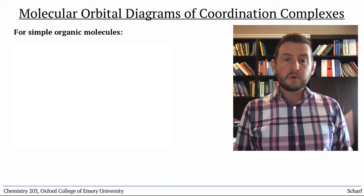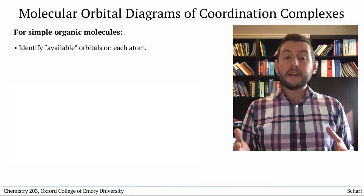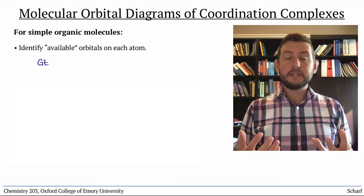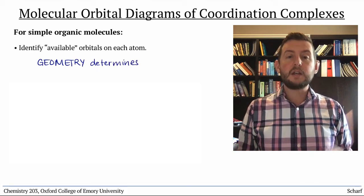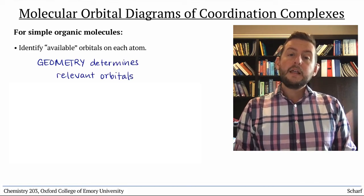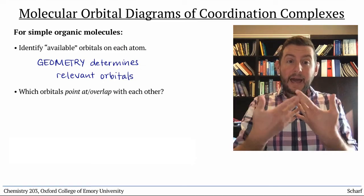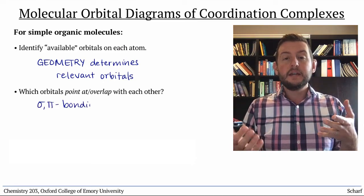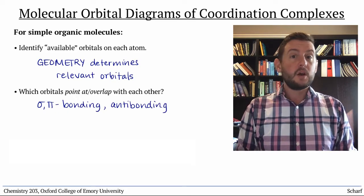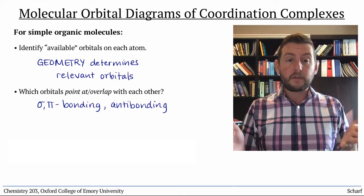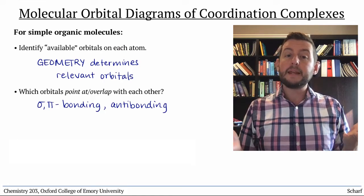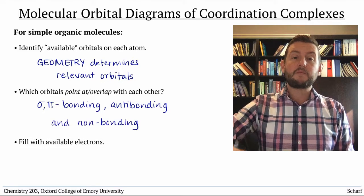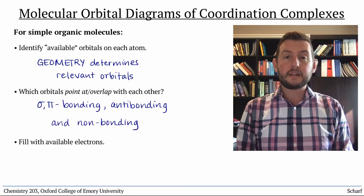In general, we think about all of the available orbitals on each atom. These are determined by the geometry and hence hybridization of that atom. Then we look at which orbitals point at each other. These make sigma bonds or pi bonds and corresponding antibonding orbitals. Orbitals that don't overlap with other orbitals remain as non-bonding orbitals. Then we fill the diagram from the bottom up with all the available electrons.